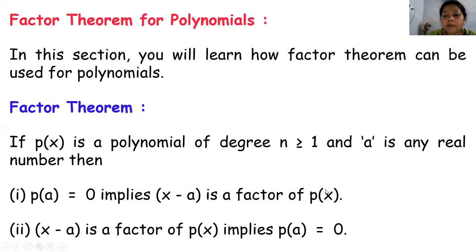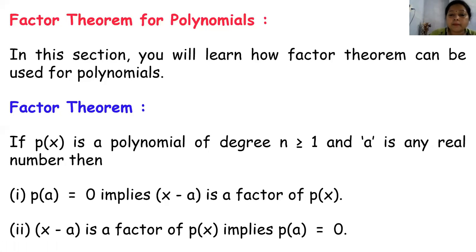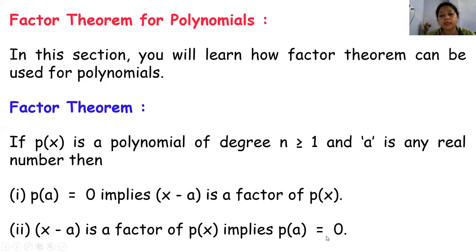Conversely, x minus a is a factor of p(x) implies p(a) equal to 0. So if p(x) is a polynomial exactly divided by (x minus a), which is the factor. In the case of numbers, if 2 divides 6, i.e., 6 is exactly divisible by 2, that means 2 is a factor of 6. Similarly, this is the factor theorem: factor of p(x) implies p(a) equal to 0.